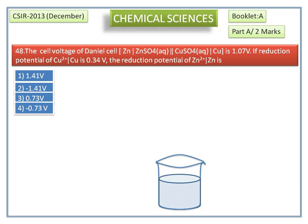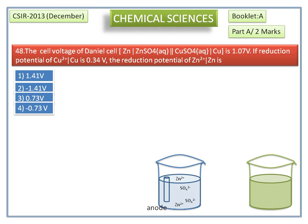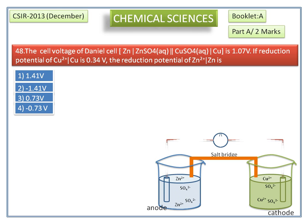This is the left side half cell in the Daniel cell, and this is the right side half cell. Once the two half cells are connected by a salt bridge and the external electrical circuit, the reaction starts — zinc is oxidized to Zn²⁺.